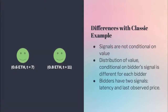The difference here with the classic example is that signals aren't actually conditional on the value being auctioned off. In the previous example, you first determine the value being auctioned off, and given this value, people receive their signals. This is not the case here, which makes it more difficult. The distribution of value conditional on bidder signals is actually different for each bidder. If you have lower latency — you're faster — you don't only have an estimate closer to the true value, but your confidence intervals are smaller as well. If you're far away, you have very wide confidence intervals. And the difficult part is that you have two signals: your last observed price, and your latency.